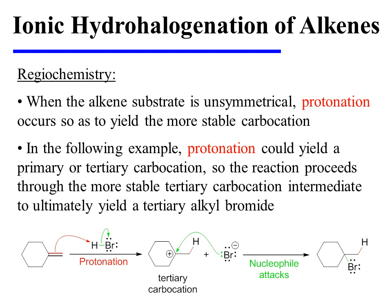When the alkene substrate is unsymmetrical, protonation occurs so as to yield the more stable carbocation. This usually results from using Markovnikov's rule, which states that the carbon of the alkene that has more hydrogens acquires the new hydrogen, which is the electrophile in this case. It is always important to double-check, though, by analyzing the stability of the carbocation, because conjugation can be a complicating factor, and Markovnikov's rule is not an absolute.